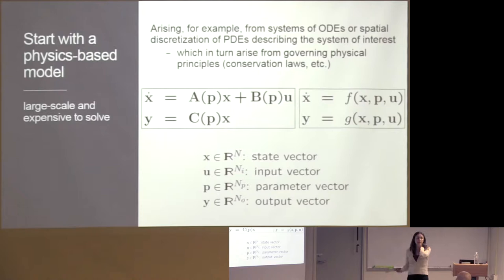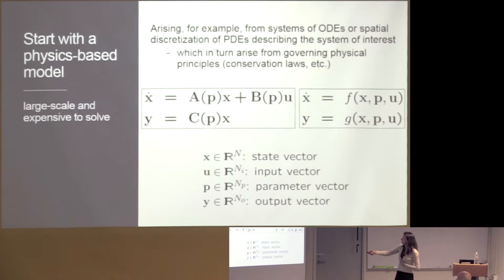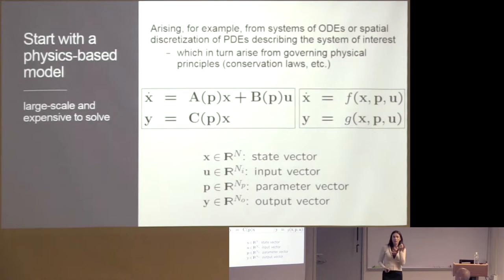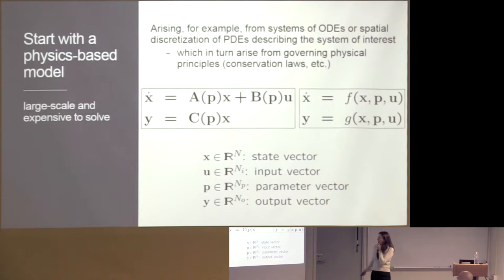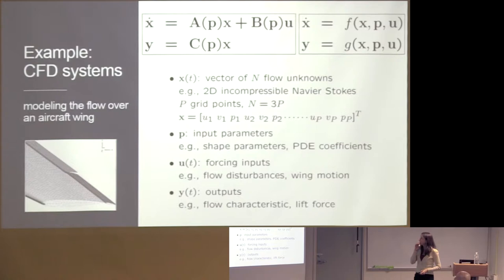For us, typically the high-fidelity model is a partial differential equation. I find it easier to think about discretizing that PDE and arriving at a large coupled set of ordinary differential equations. On the left here's a system that's linear in state; on the right a general nonlinear system. X here is my state vector — the vector of unknowns. I've got inputs U that are external forcing to the system, parameters P, and matrices A, B, and C that depend on P. I have output quantities of interest Y. Here's the familiar state-space system: X-dot = AX + BU, Y = CX, and on the right the more general nonlinear case.